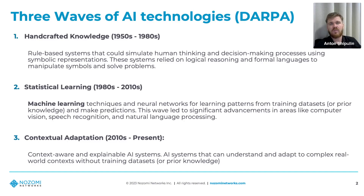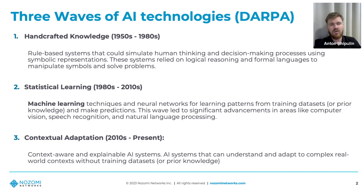The third wave, which is happening right now, is contextual adaptation — context-aware and explainable AI systems that can understand and adapt to complex real-world contexts without a training data set or prior knowledge. This is unsupervised learning.